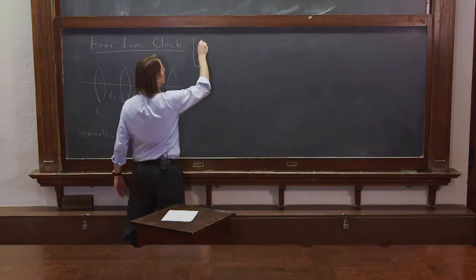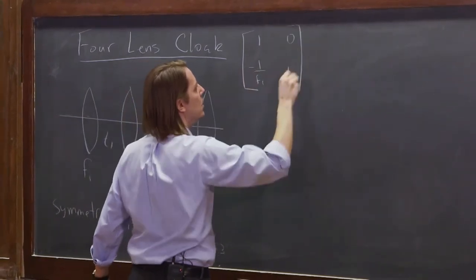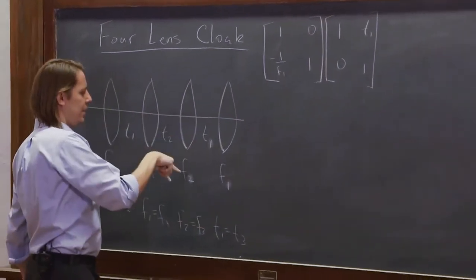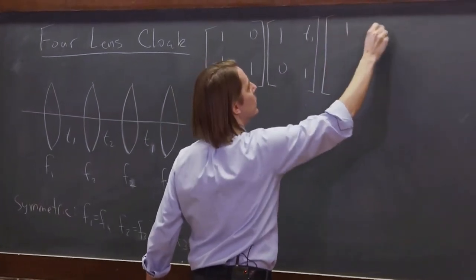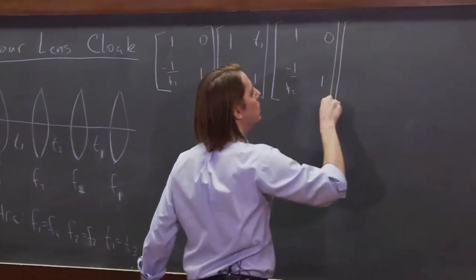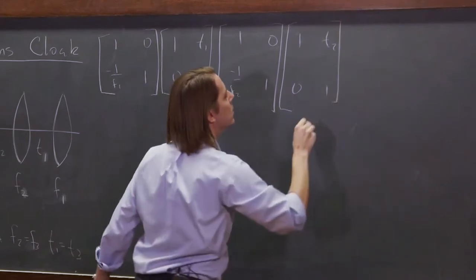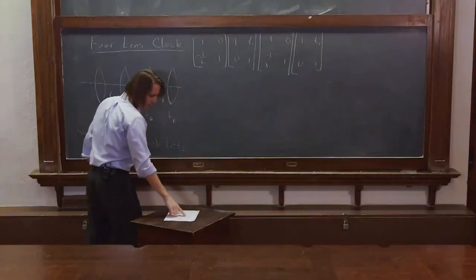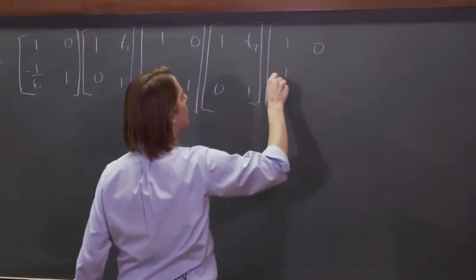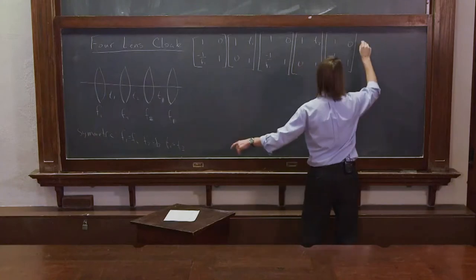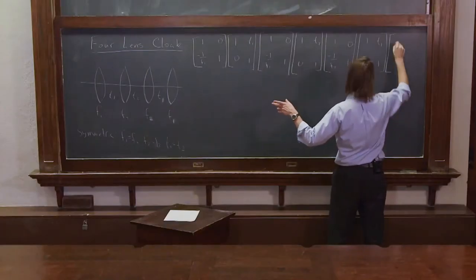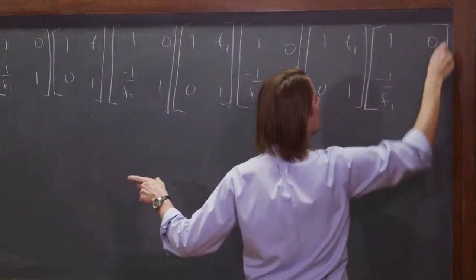I'm going to do this one first, an F1, 1, 0, minus 1 over F1, 1. And then propagate T1, 1, T1, 0, 1. And then an F2, 1, 0, minus 1 over F2, 1. And then propagate T2, 1, T2, 0, 1. And then, make sure I'm on the right path here, got to do another F2, 1, 0, minus 1 over F2, 1, and then we've got to propagate T1, 1, T1, 0, 1. And then finally that first refraction at the very first lens, 1, 0, minus 1 over F1, 1, like that.